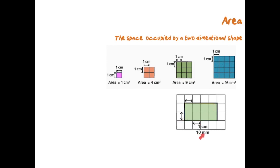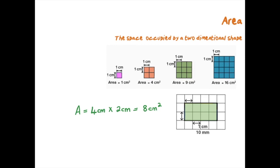But what if this was millimeters? Remember, one centimeter equals 10 millimeters. That will mean that my length is 40 millimeters and my width is 20 millimeters, and 40 times 20 gives me 800 millimeters squared. So what happened in terms of this conversion? 4 centimeters multiplied by 2 centimeters gave me 8 centimeters squared, while 40 millimeters multiplied by 20 millimeters gives 800 millimeters squared.